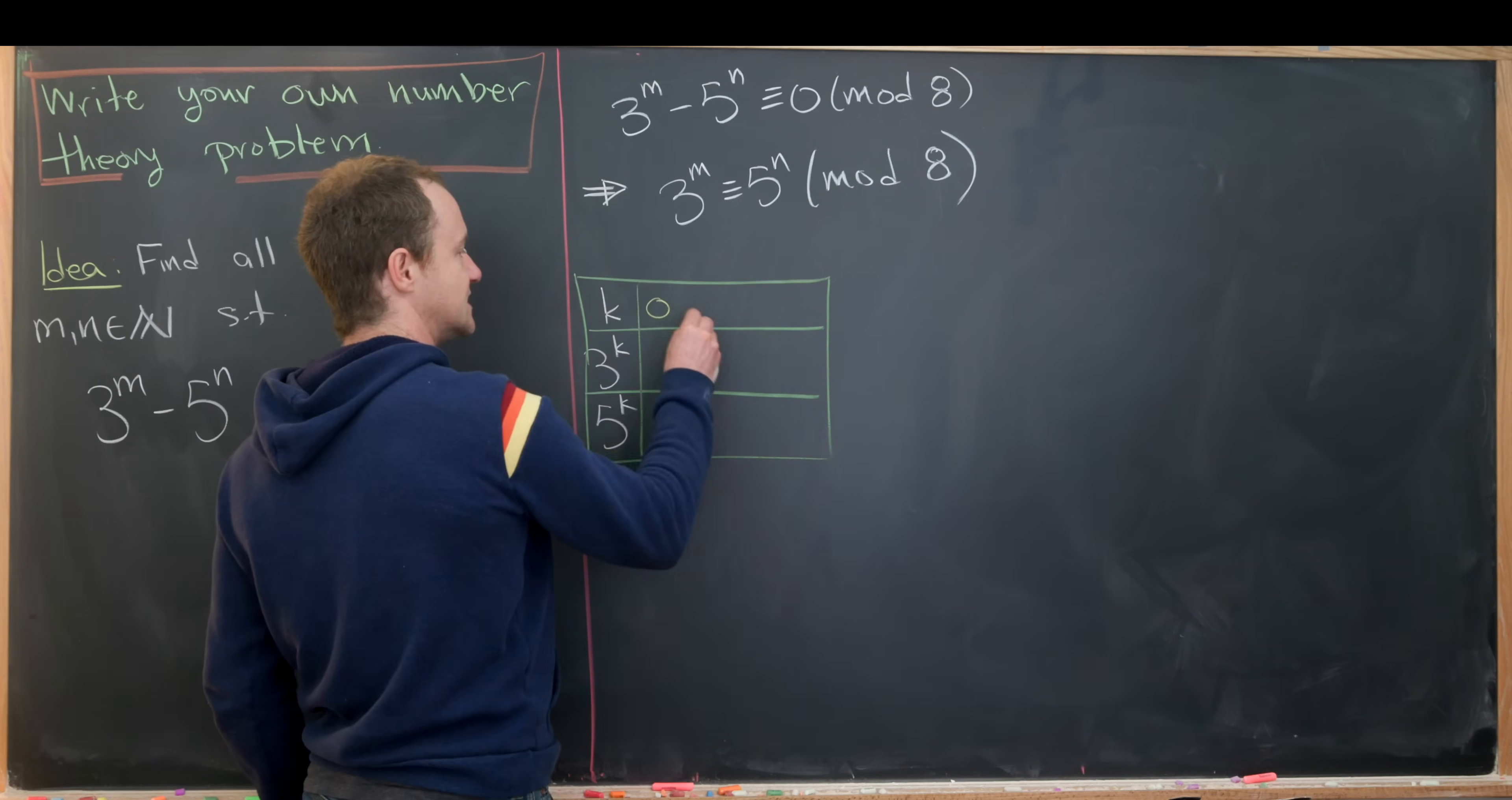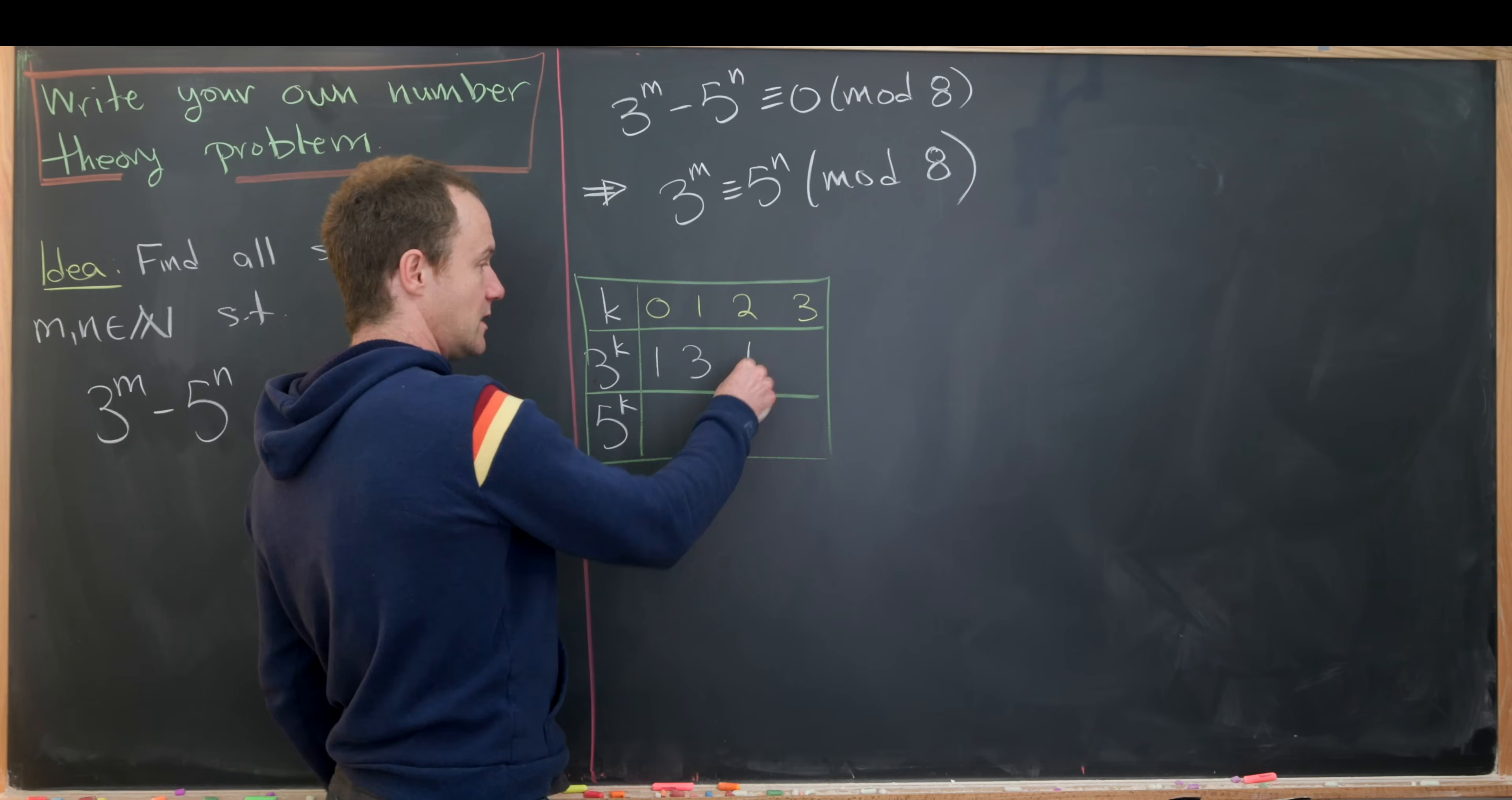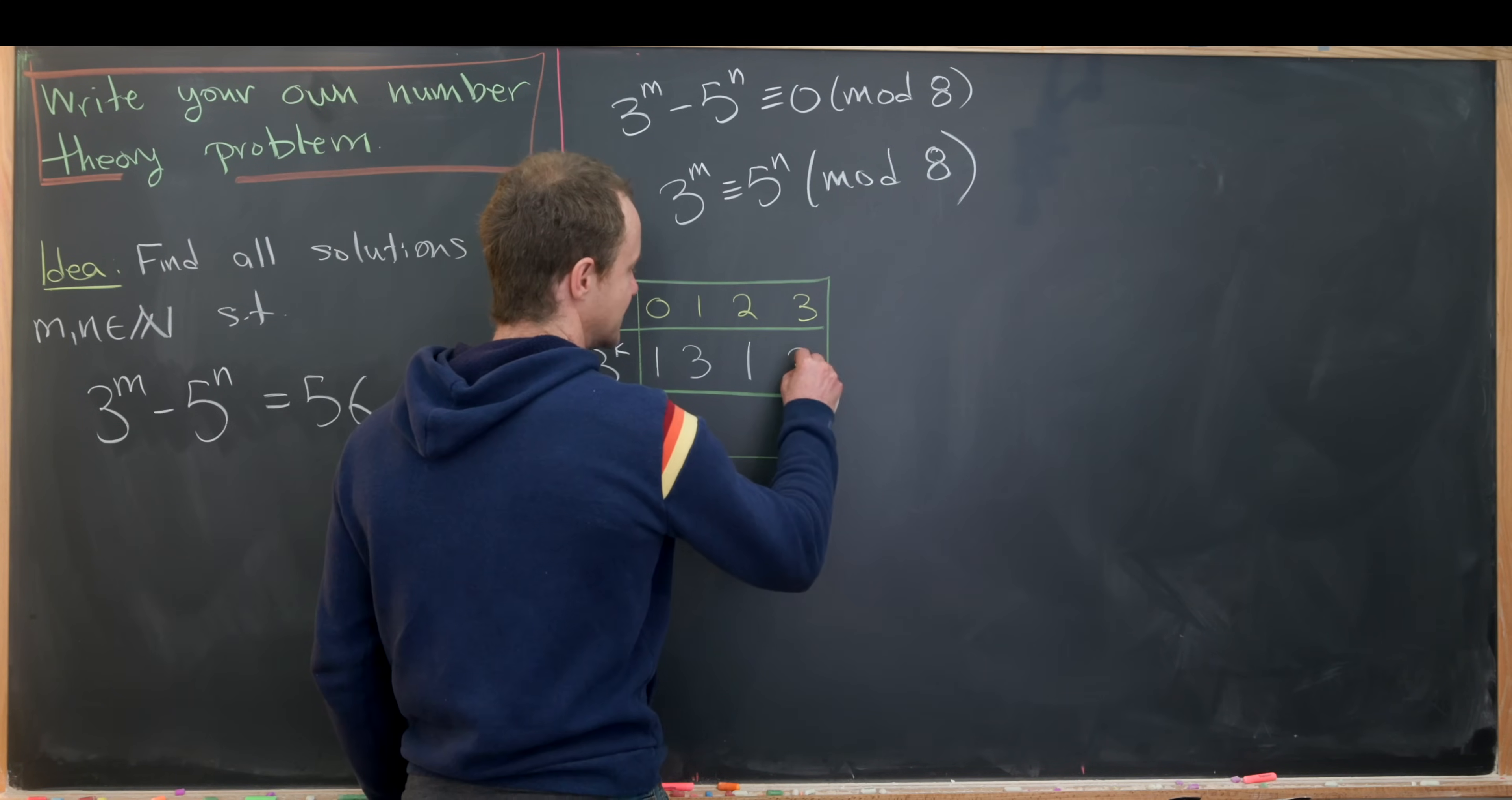k equals 0, 1, 2, 3—I think those are the only values of k that we really need. 3 to the 0 is 1, 3 to the 1 is 3, 3 squared is 9, but 9 modulo 8 is 1. Now you can see this is going to repeat. If 3 squared is 1, then 3 to any odd number will be 3, and 3 to any even number will be 1. So here we have 3.